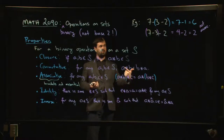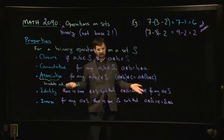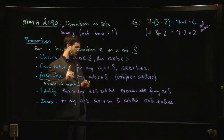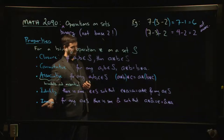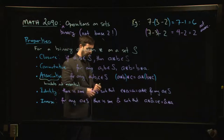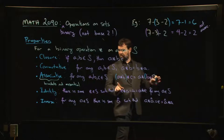Both addition and multiplication, when working over the rational numbers or the real numbers, have all these properties — with one exception. For multiplication, there is one element that does not have an inverse, and that's zero.